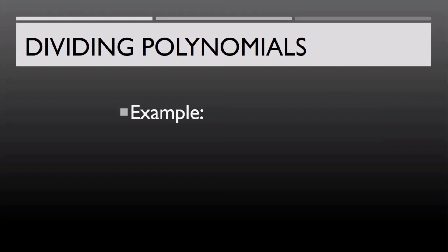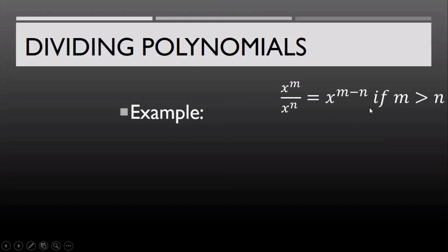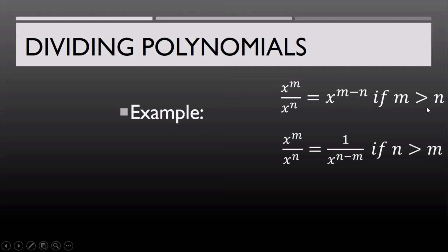Let's have a quick recall on the laws of exponents. If we have x raised to m over x raised to n, that will be equal to x raised to m minus n if m is greater than n, and it will be equal to 1 over x raised to n minus m if n is greater than m.